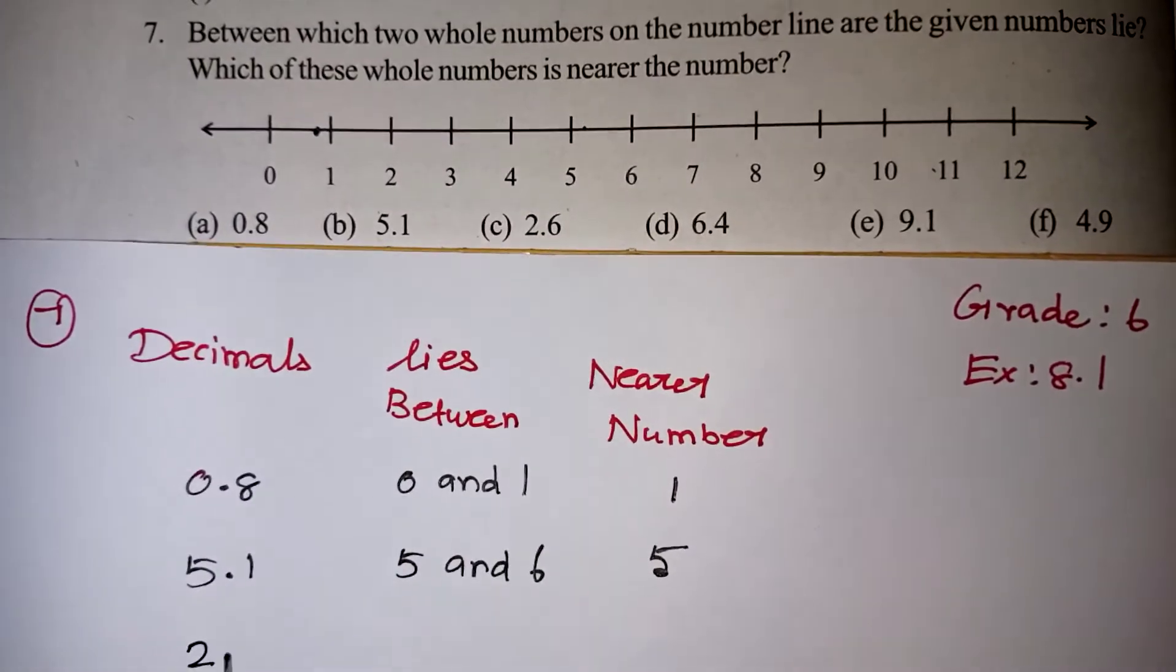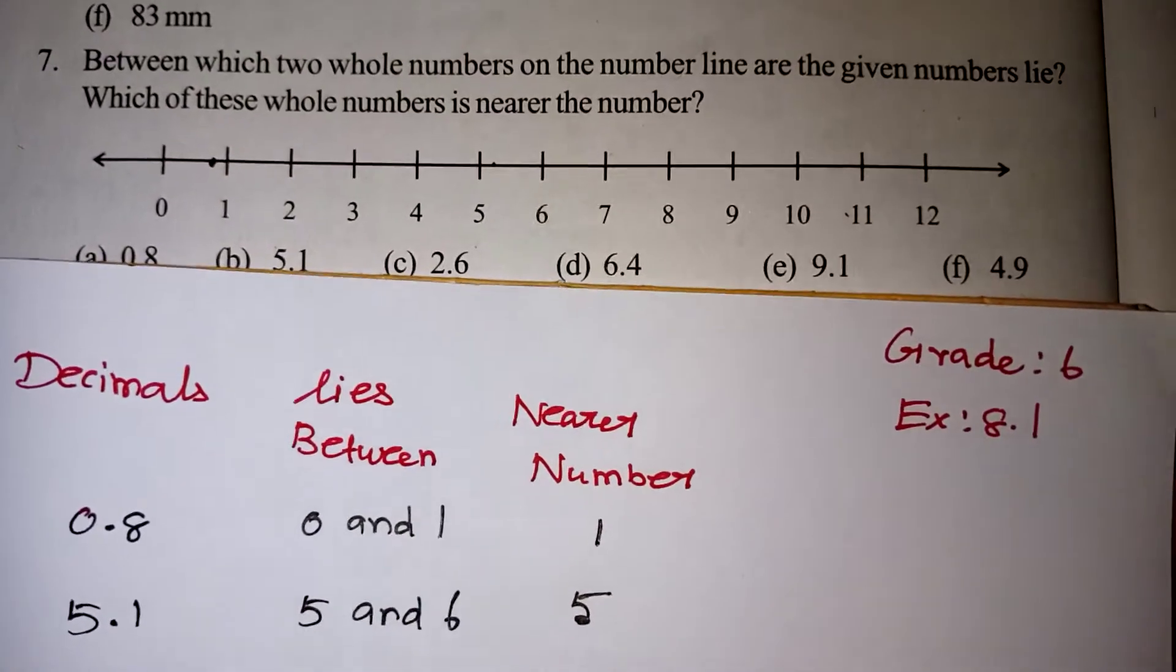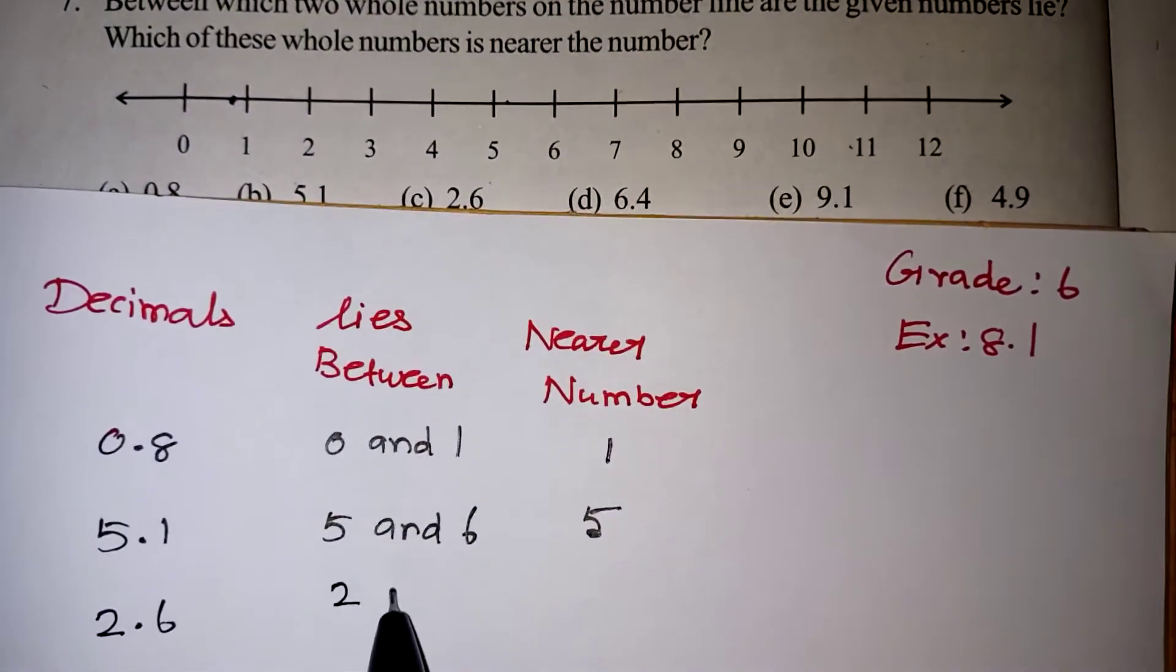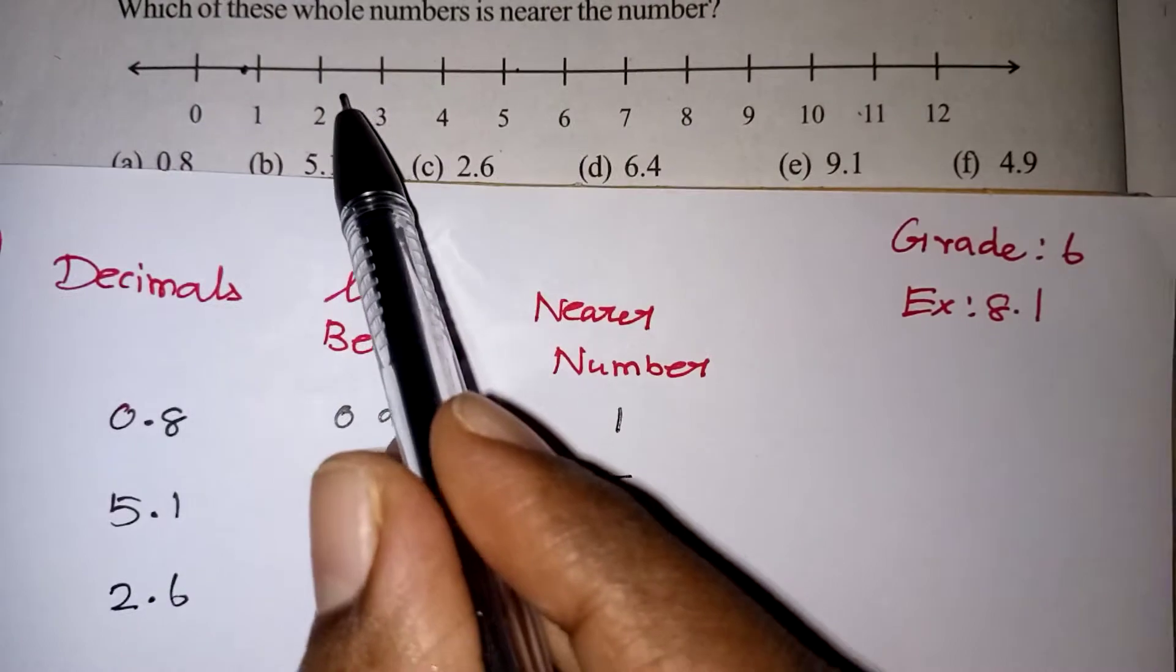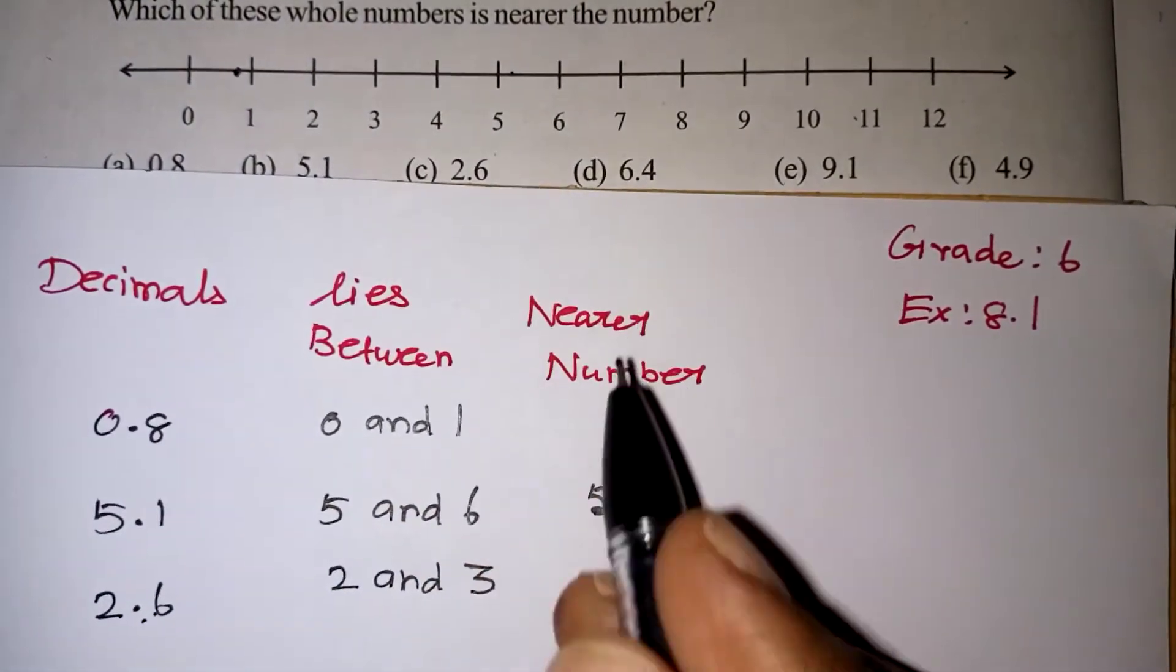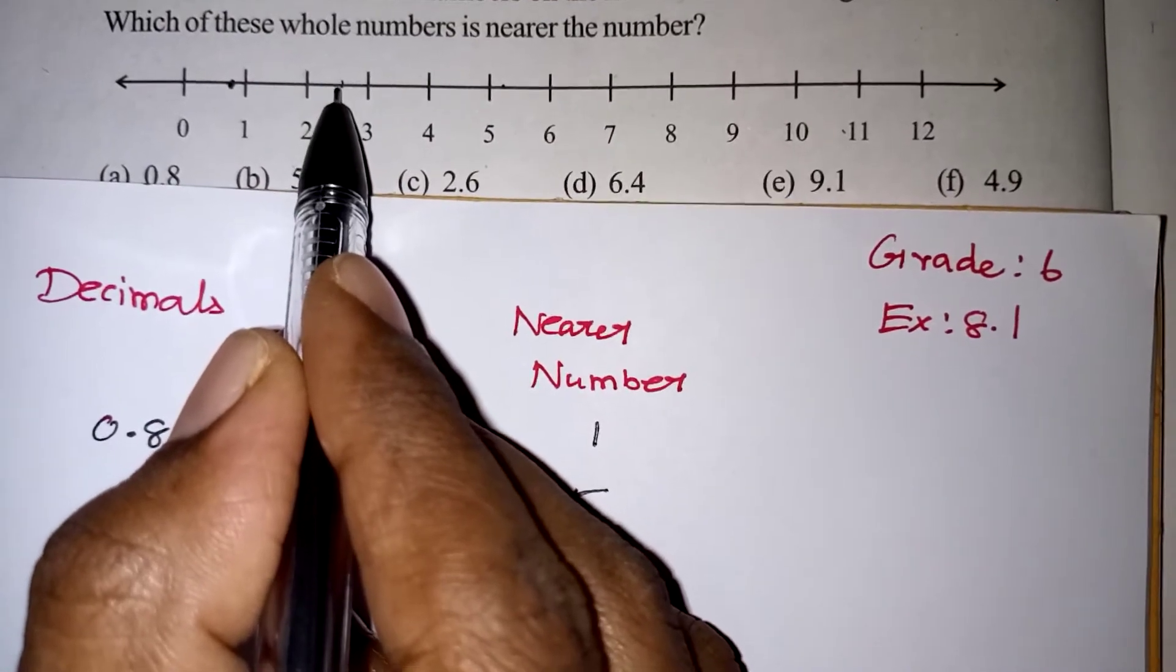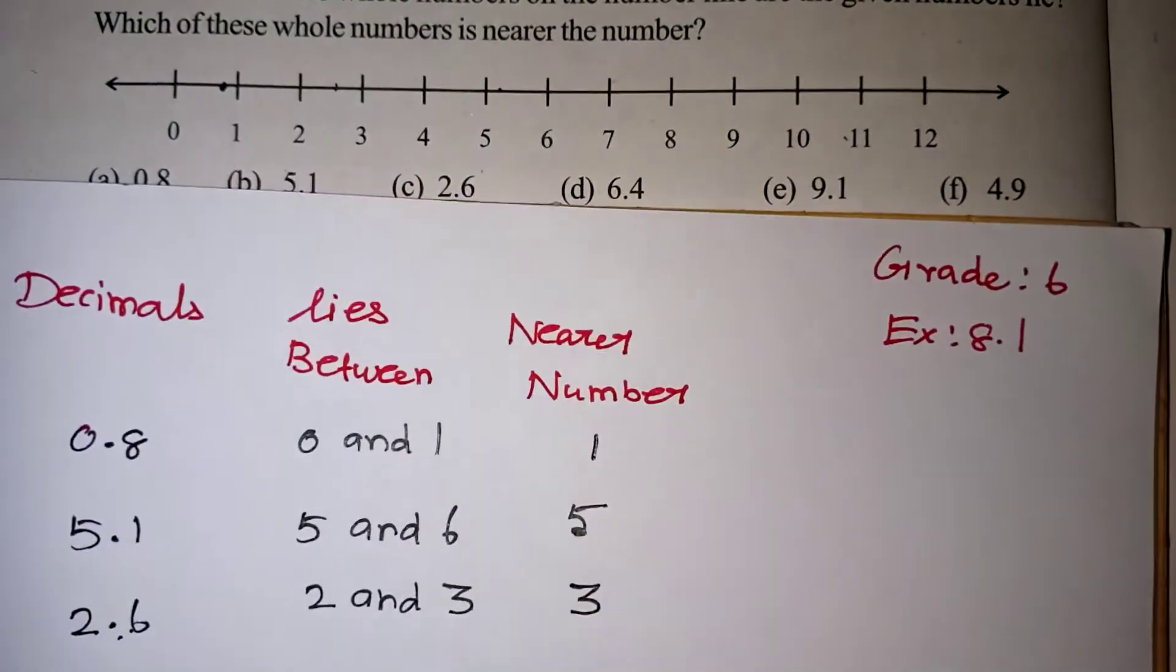Next is 2.6. 2.6 is a number coming after 2. After 2, we have 2.1, 2.2, 2.3 and so on. So 2.6 will come in between 2 and 3. Which number is nearest? For 2 and 3, the middle value is 2.5. This 2.6 comes after 2.5, so the number will be nearest to 3. The number which comes more than 2.5 will go to 3. If it is less than 2.5, it will come to 2. That is the pattern.